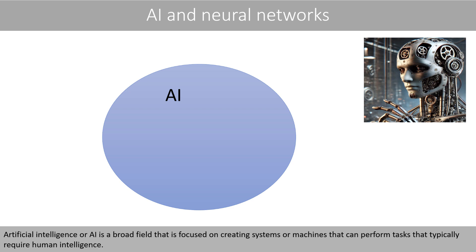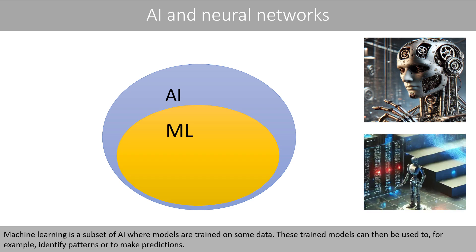Artificial intelligence, or AI, is a broad field that is focused on creating systems or machines that can perform tasks that typically require human intelligence. Machine learning is a subset of AI where models are trained on some data. These trained models can then be used to, for example, identify patterns or to make predictions.